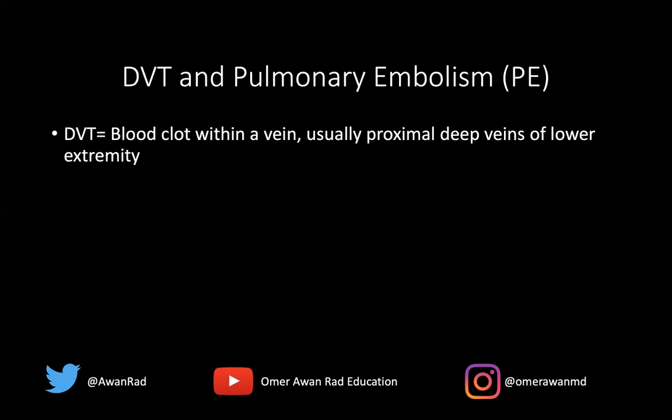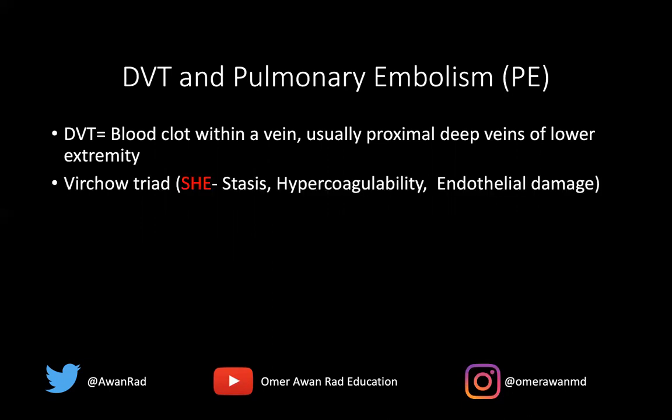A DVT, or deep venous thrombosis, is a blood clot within a vein — typically the deep veins of the proximal lower extremity: the femoral, the iliac, or the popliteal vein. Those are the most common places to get a clot. The Virchow triad predisposes to DVTs and even PE.